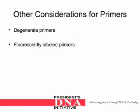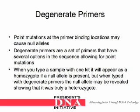Other considerations for primers include using degenerate primers and fluorescently labeled primers. Point mutations at the primer binding locations may cause null alleles. Degenerate primers are a set of primers that have several options in the sequence, allowing for point mutations. When you type a sample with one kit, it will appear as a homozygote if a null allele is present. But when typed with degenerate primers, the null allele may be revealed, showing that it was truly a heterozygote.